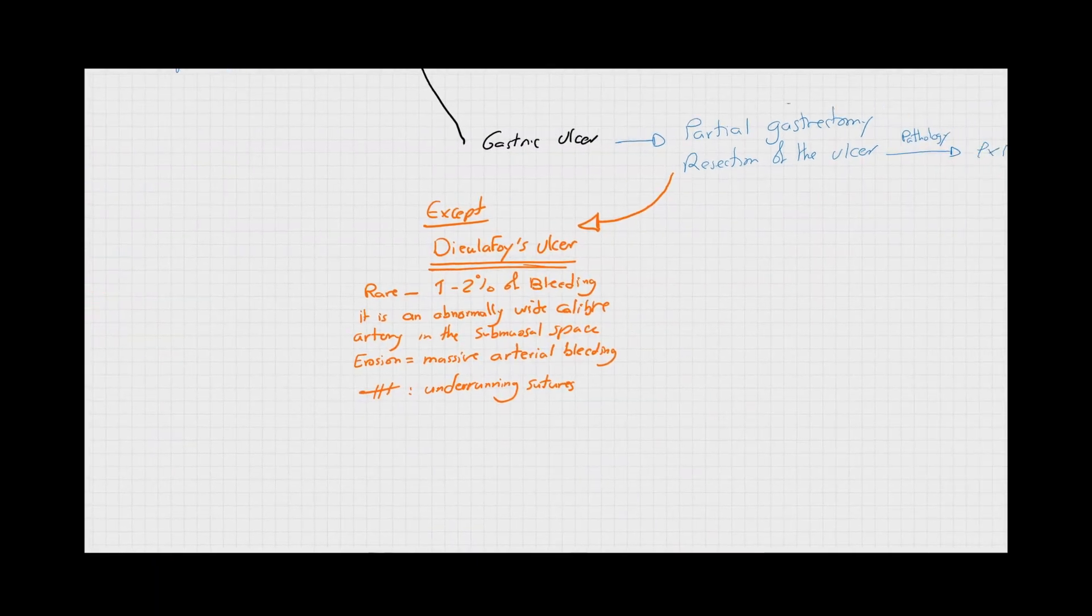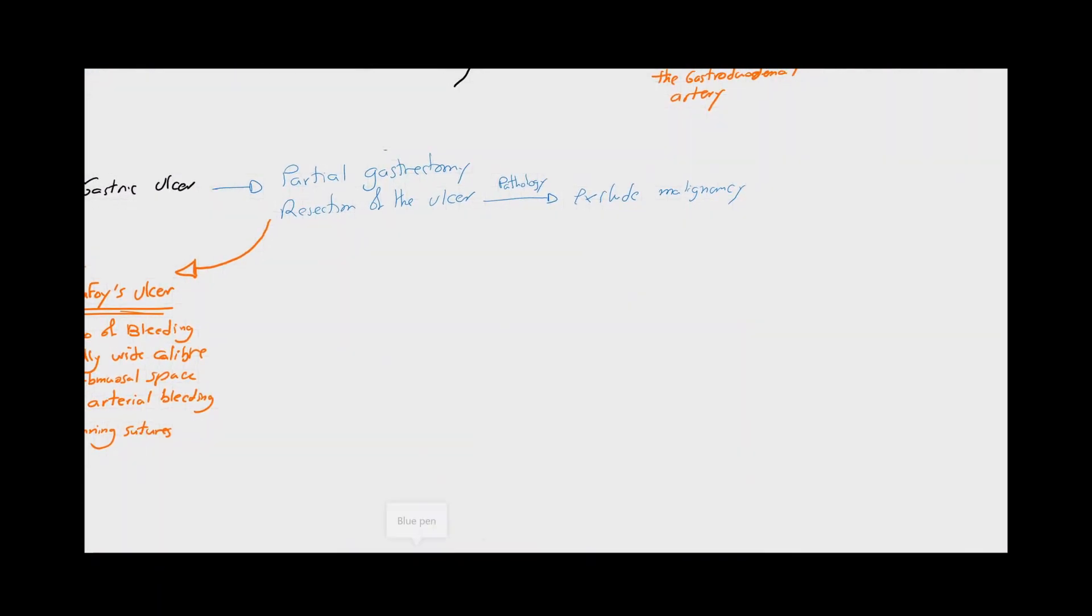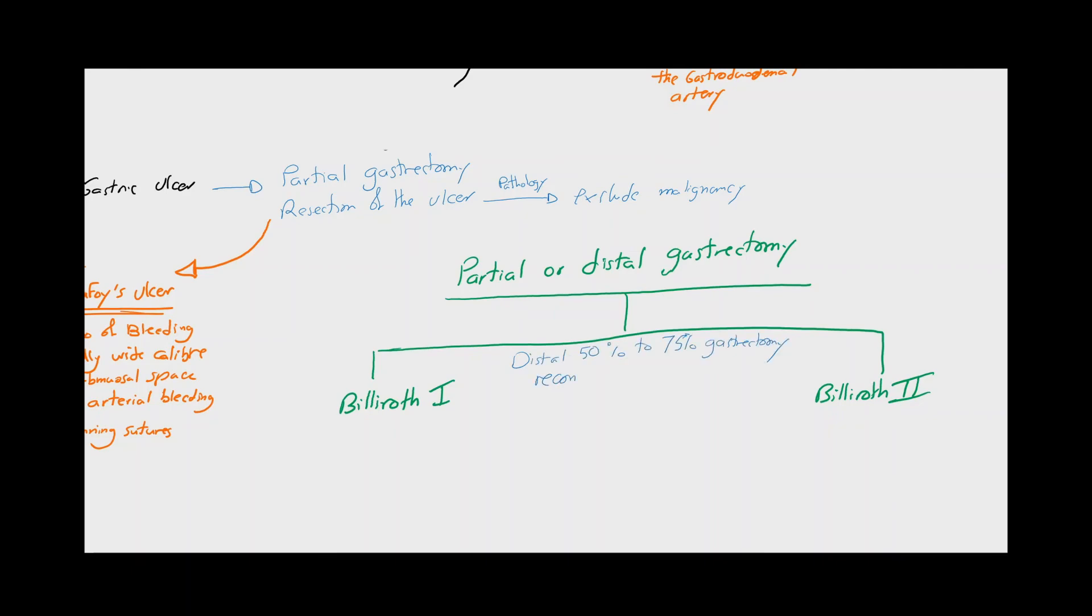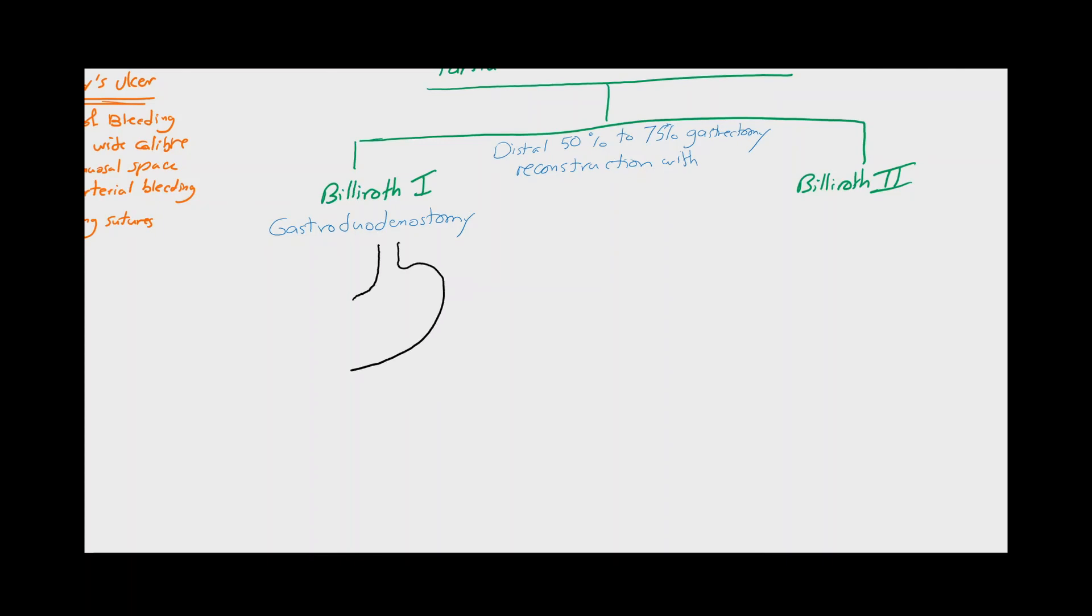Now we will talk about the main types of distal or partial gastrectomies. The two main types of distal gastrectomies are called the Billroth 1 and Billroth 2 operations. They share the same principle of resection, in which about 50 to 75 percent of the stomach is resected. The main difference lies in the reconstruction strategy, which is in the case of Billroth 1 operation through gastroduodenostomy, in which the remaining part of the proximal stomach is connected to the duodenal stump.